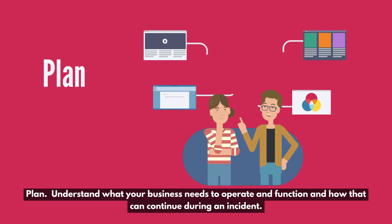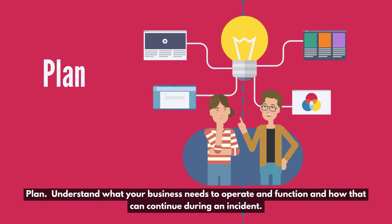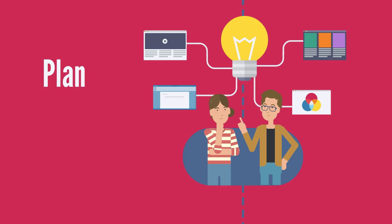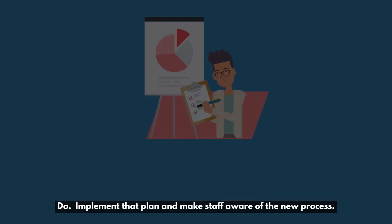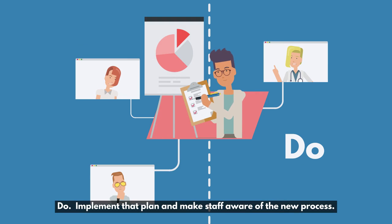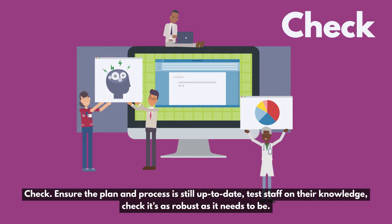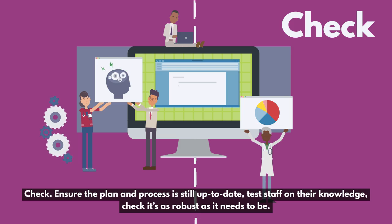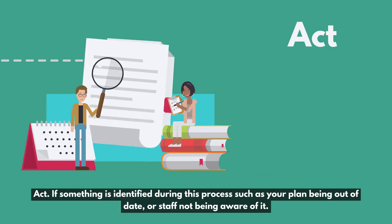Plan: understand what your business needs to operate and function, and how that can continue during an incident. Do: implement that plan and make staff aware of the new process. Check: ensure the plan and process is still up to date, and test staff on their knowledge to check it's as robust as it needs to be.